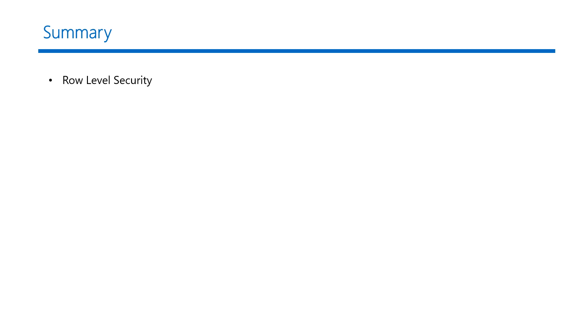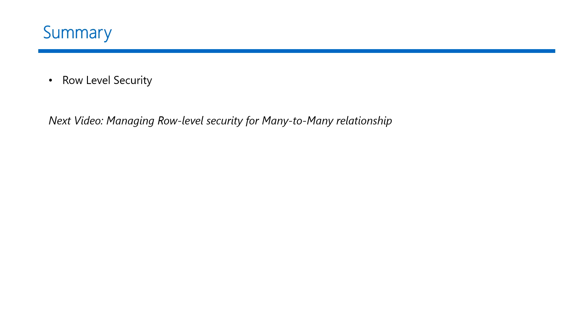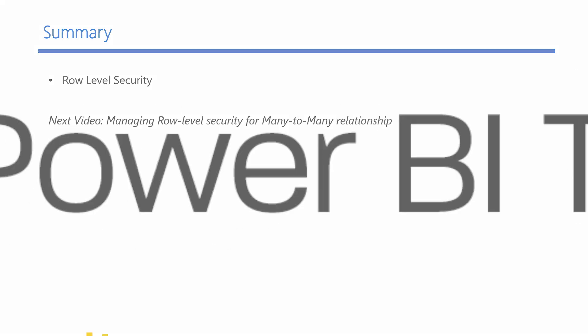In summary, we have learned how to implement dynamic row level security with manager-level access. This is just one way of implementing it, and there are many other ways to achieve the same scenario. In the next video we will talk about managing row level security for many-to-many relationships. Thank you.